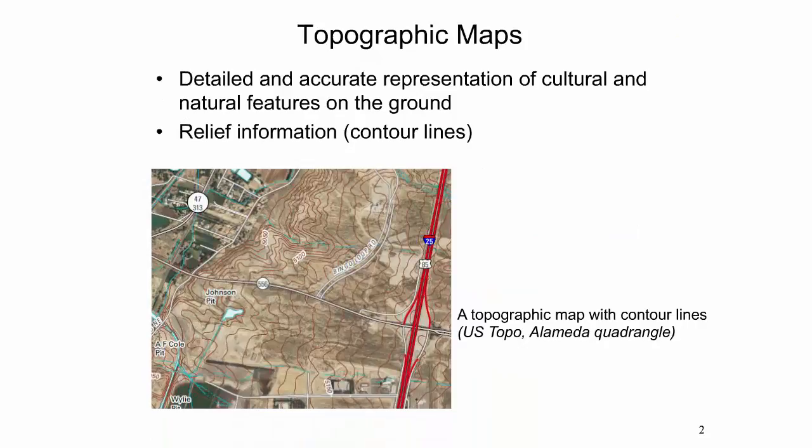A topographic map provides a detailed and accurate representation of cultural and natural features on the ground, as well as a quantitative representation of relief, usually using contour lines. A topographic map is typically published as a map series, made up of two or more map sheets that combine to form the whole map. Topographic maps differ from other map types in various aspects. For example, planimetric maps do not show elevations, or thematic maps focus on specific topics.